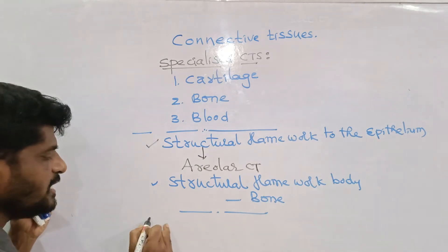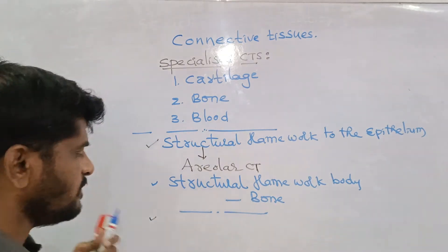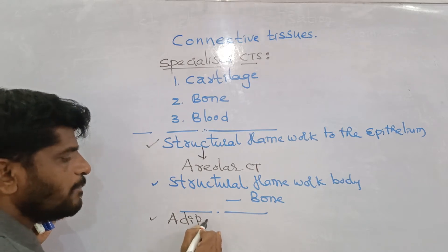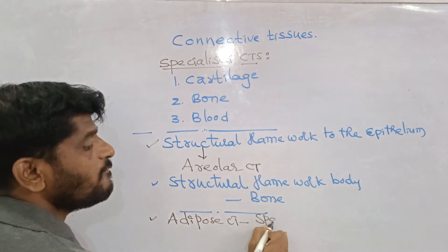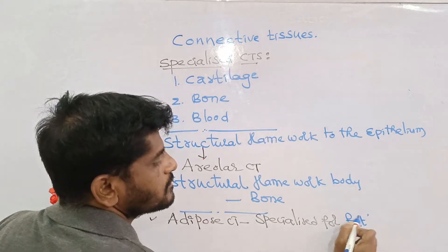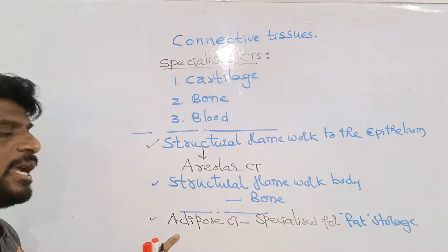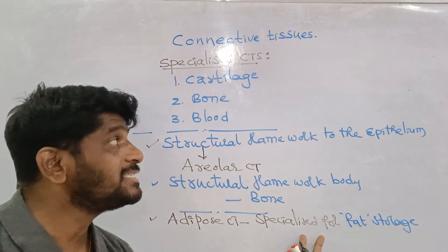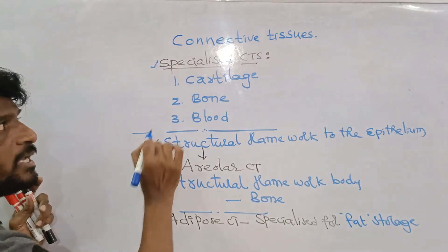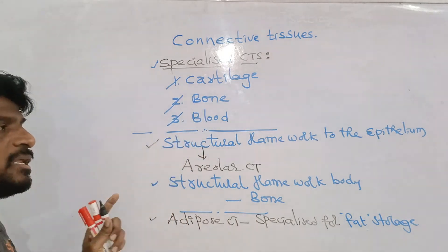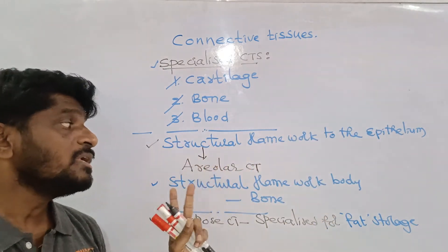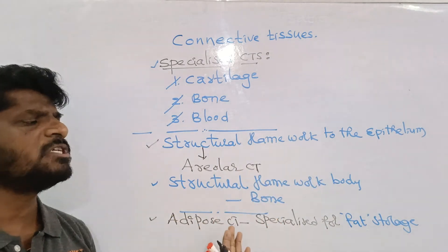You should not be confused: there is a connective tissue which is specialized for storage of fat, but this is not a specialized connective tissue — it is the adipose connective tissue. Adipose connective tissue is specialized for fat storage, but it does not fall under the specialized connective tissues category. Specialized connective tissues are cartilage, bone, and blood.